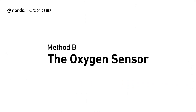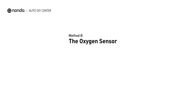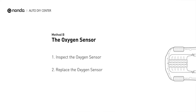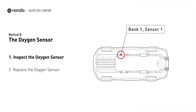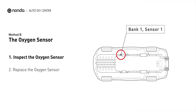Method B: Oxygen Sensor. This oxygen sensor is located right before the catalytic converter. Bank 1 is on the side with cylinder number 1. Sensor number 1 is usually the one in the exhaust manifold.